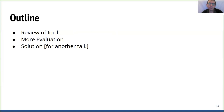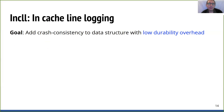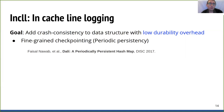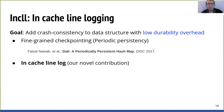I will now present the in-cache line logging idea. It is a method to be used as a tool for expert library developers. In-cache line logging addresses both the weaknesses of traditional checkpointing and transactional undo-logging. It consists of two components: the first is fine-grained checkpointing, which relies on the periodic persistence idea from Masstree; the second is using a log within a cache line, which is the novel contribution. Using both components, in-cache line logging achieves zero explicit writebacks in the fast path of the data structure.